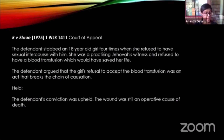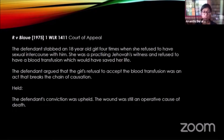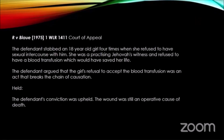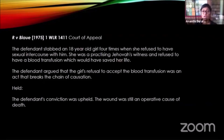We have the case of R v Blaue. On very similar facts, the defendant stabbed the victim many times and she refused to have a blood transfusion because she was a Jehovah's Witness. The defendant argued that it was the refusal that was the cause of death — that the act of the accused caused the harm, but the consequence was actually caused by the refusal to consent to the blood transfusion, and therefore there was a break in the chain of causation. The courts held: no. The wound inflicted by the accused is still operating as a cause of death. The judge said clearly: if you ask what is the cause of death, the answer is the stab wounds.